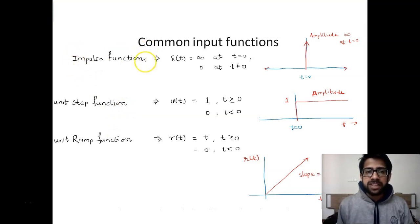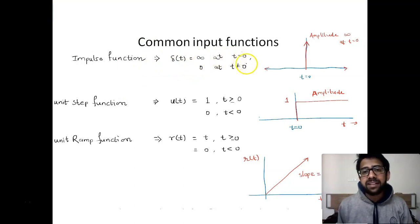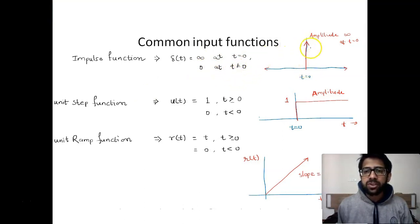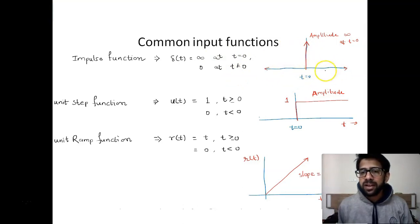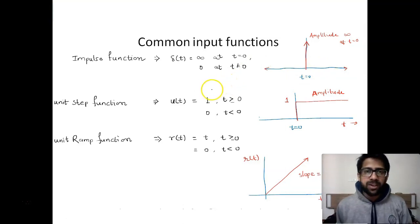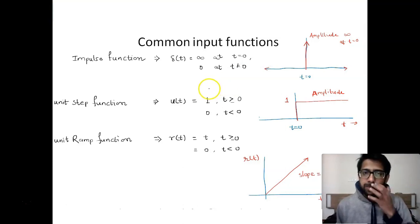The impulse function is mathematically represented as delta(t) equals infinity at t equal to zero, and zero at t not equal to zero. So the impulse function gives you a lot of amplitude at t equal to zero and no output the remaining time. When a goalkeeper or a footballer kicks the football, that kind of input given to the ball is the impulse kind of function.